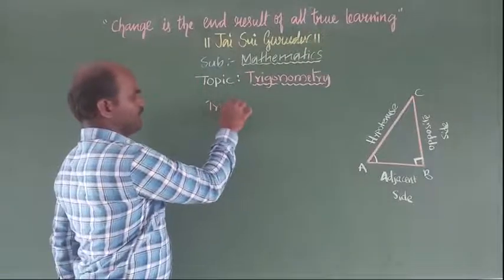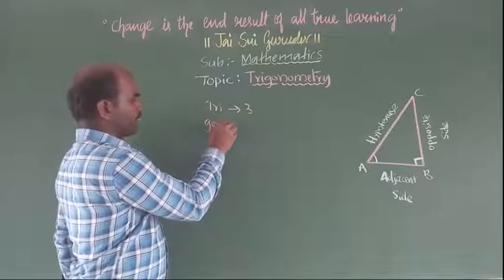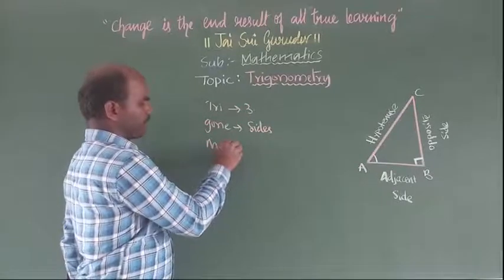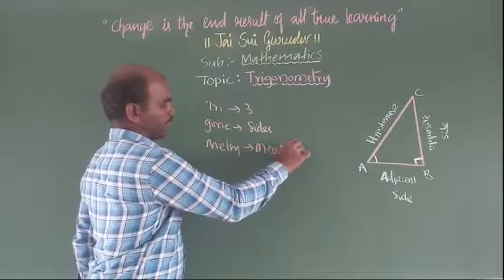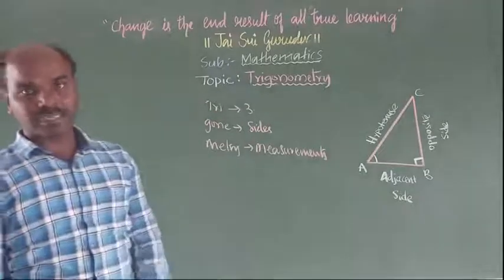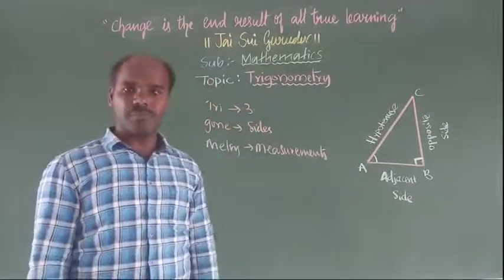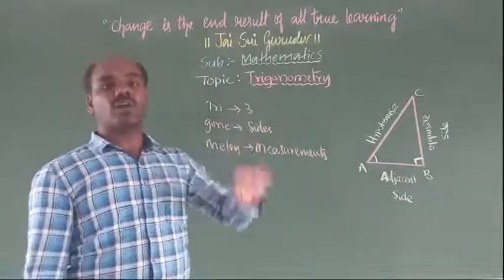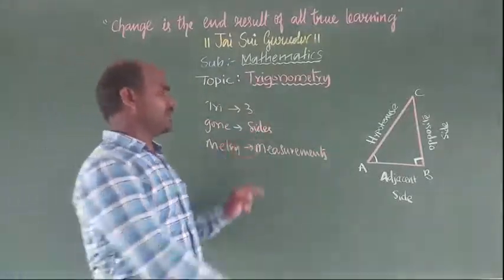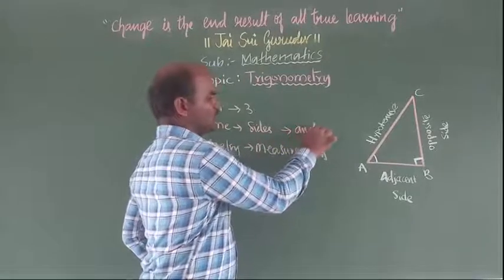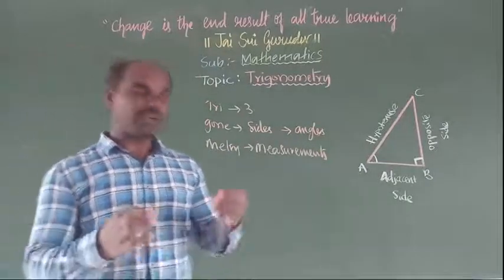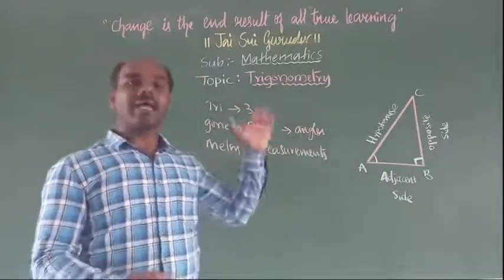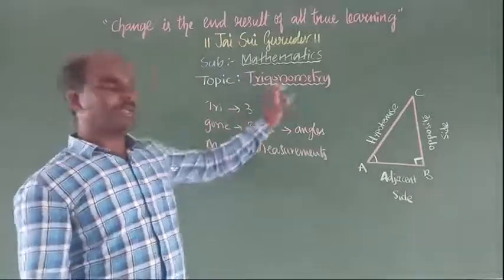So trigonometry - 'tri' means 3, 'gono' means angle, and 'metry' means measurements. In a triangle we have 3 sides. To find the value of the 3 measurements of the sides of the triangle we use trigonometry. When you know the sides it is also possible to find the angles. So trigonometry means the relationship between the sides and angles of triangles.